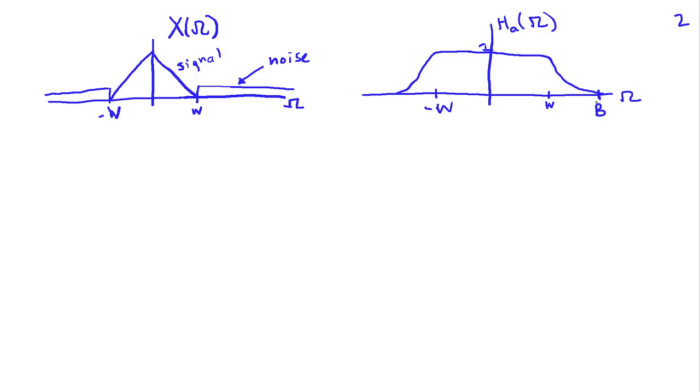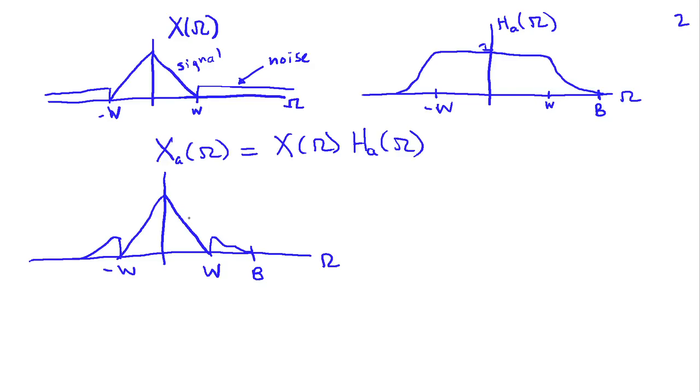So what I'm going to have at the output of this filter, we call XA. So XA of omega is equal to X of omega times HA of omega. And we can sketch that. So what we have is that the pass band of the anti-aliasing filter HA is going to pass the signal that lies between minus W and W. So there's no real distortion there. And then the noise gets attenuated by the transition band until it finally gets wiped out by the stop band. So we have this interval here of noise that's residual.